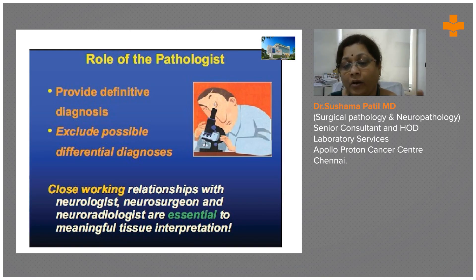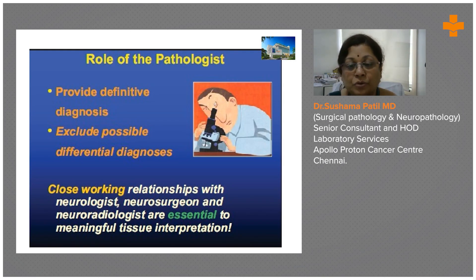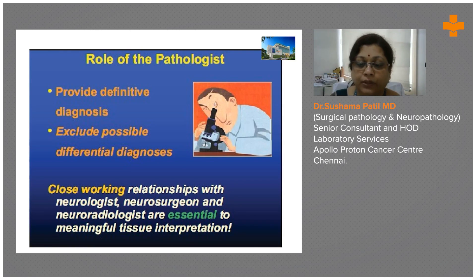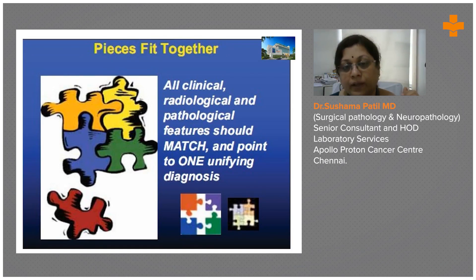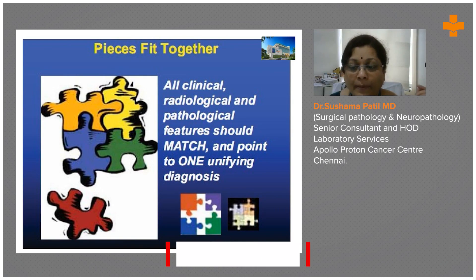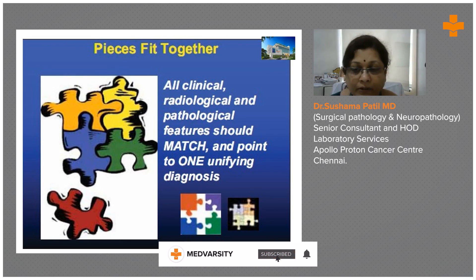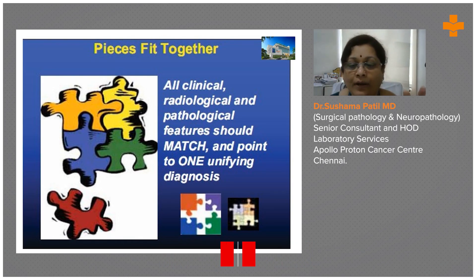You cannot sit alone and make a diagnosis — you are definitely going to miss the grade, or there may be discrepancy when the final diagnosis comes out. We correlate histopathology findings with neuroimaging, so it is essential to work in cohesion with the neuroradiologist and neurosurgeon. All the pieces have to fit together: if you combine clinical, radiological, and pathologic features, they will match and the jigsaw puzzle will come together, giving you a unifying diagnosis.